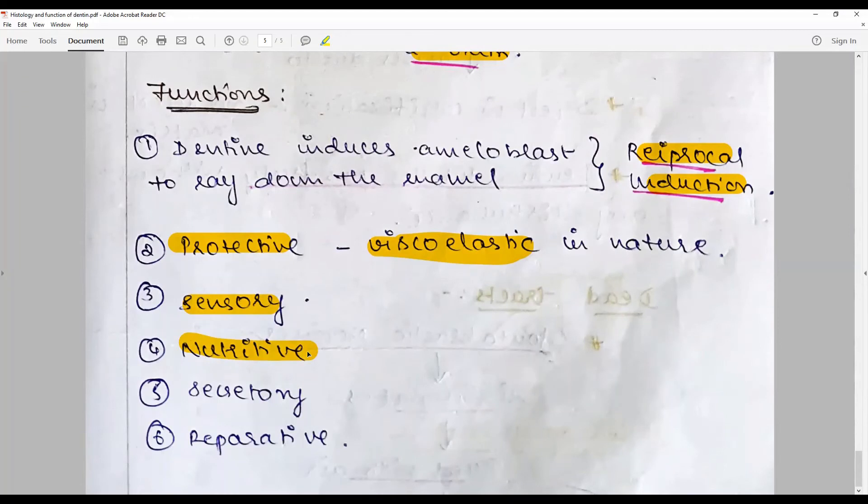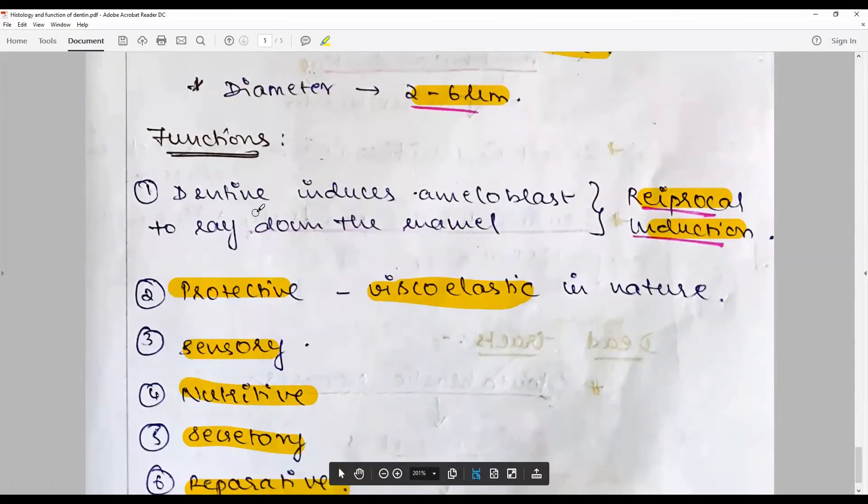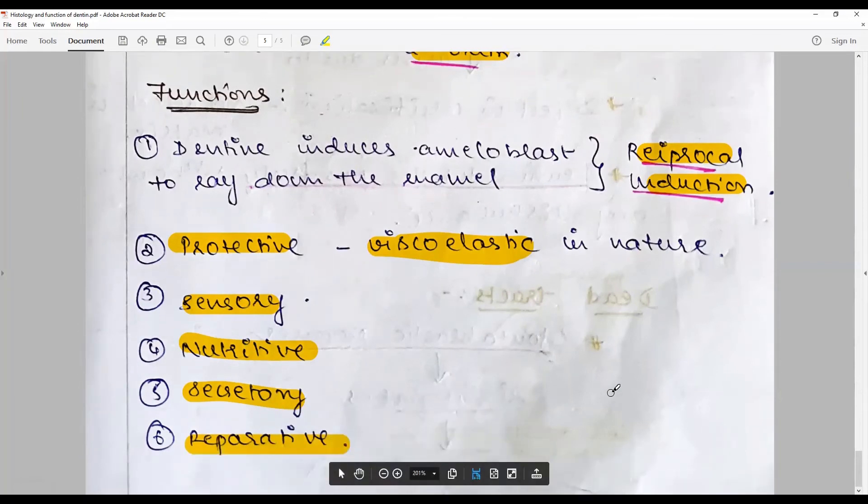Nutritive, because they have access to the pulp; they enrich and via the dental lymph they nourish the odontoblast. Secretory, because odontoblasts secrete the non-collagenous and collagenous protein. Reparative, in case of need the tertiary dentin formation is there. So functions of dentin: inductive, protective, sensory, nutritive, secretory, reparative.